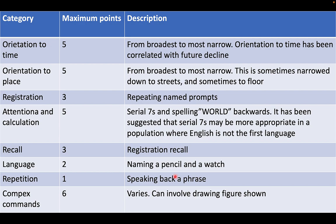Each of these is scored with maximum points. When you talk about orientation to time, we have a maximum score of 5. We start from the broadest perspective to the most narrow perspective. Orientation to place also has a maximum of 5 points, going from the broadest to the most narrow — from the country, to the province, the area, the hospital, and even the floor of the hospital where they are.